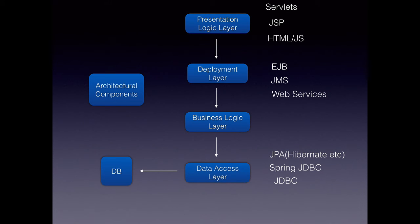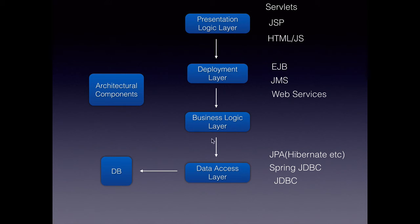The architectural component or common services layer contains components that can be used across all these layers. We either code them in-house using these technologies or use third-party libraries available in the open source or commercial world.